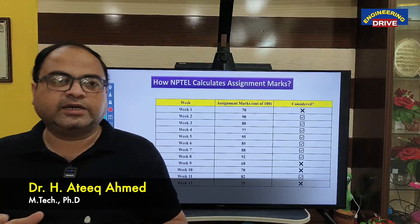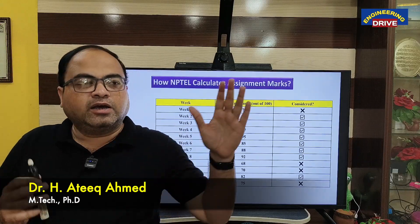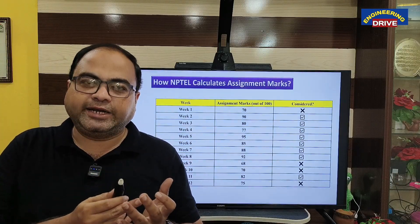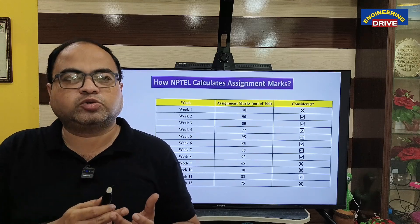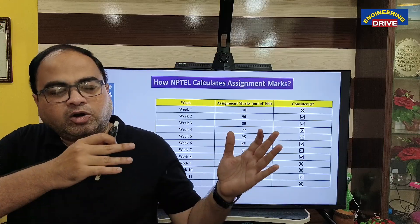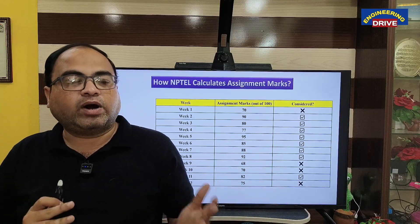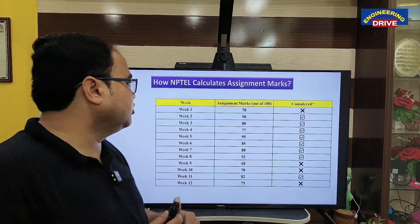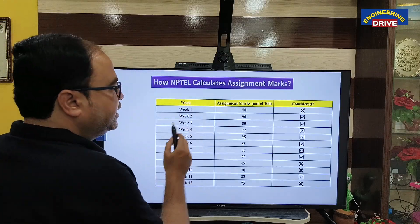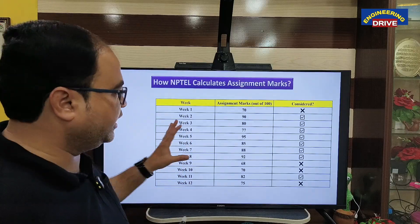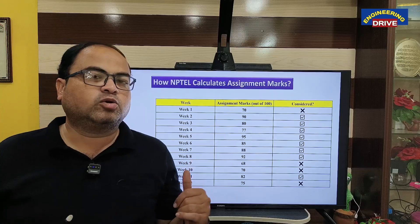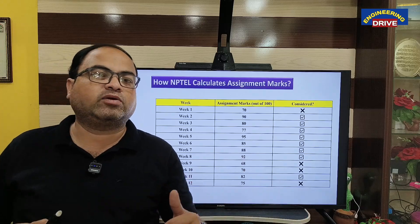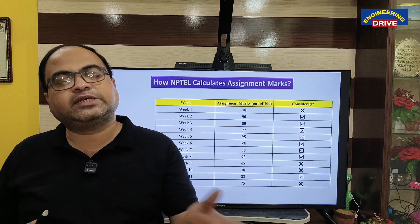How NPTEL calculates the marks of all the assignments you have submitted — finally NPTEL concludes the following: if you have taken a four-week course, best three assignments will be taken; if you have taken an eight-week course, best six assignments will be taken; if you have taken a 12-week course, best eight assignments will be considered. I am going to discuss how NPTEL calculates the average and what your final marks are by taking one simple example. Let us take a 12-week course, as this is the course most students select, and similarly you can calculate for eight-week and four-week courses.